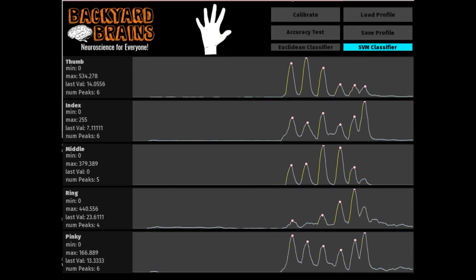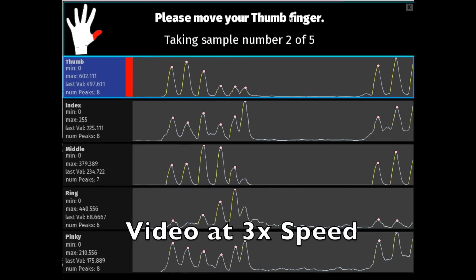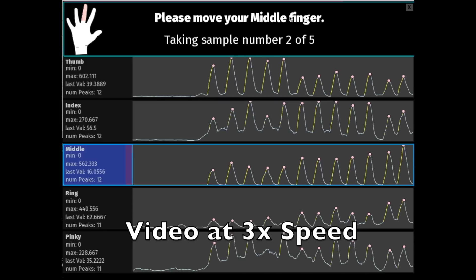In our beta hacker hand software, click on the calibrate button to get started, and follow the instructions, moving your fingers in distinct strong movements.